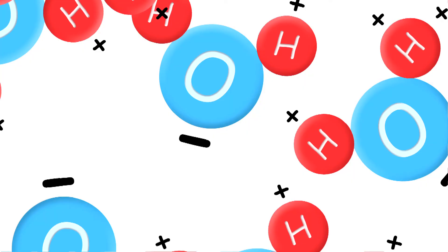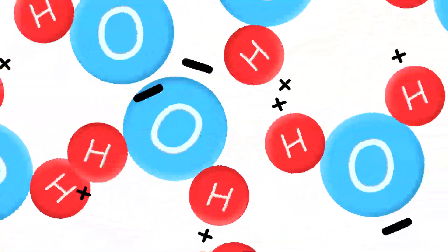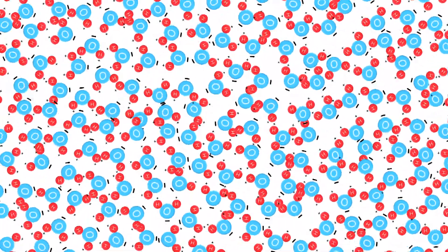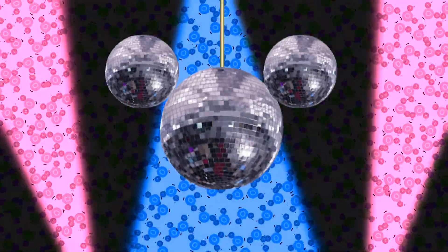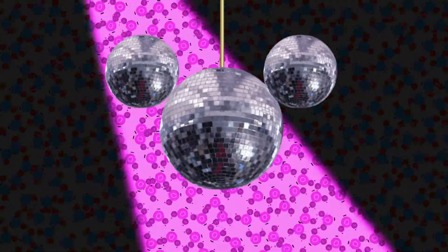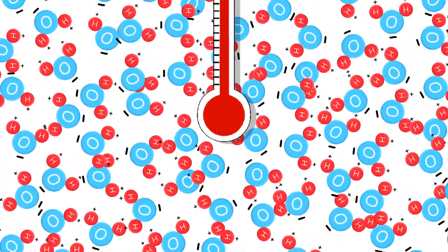In liquid state, the H2O molecules are making and breaking those bonds constantly. Imagine massive numbers of H2O molecules in a hot dance club, dancing so closely and wildly that they're constantly making and breaking contact with each other. There's a lot of motion, a lot of energy, and they're not able to lock on to each other very well.